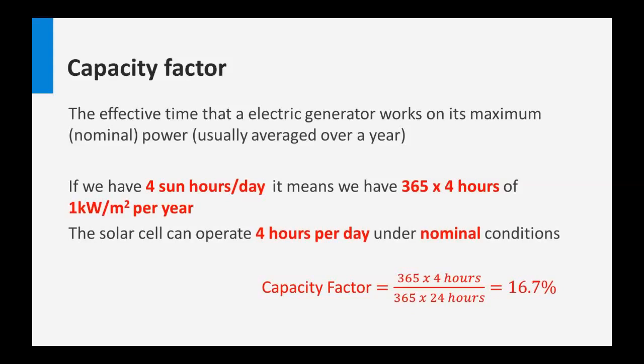For instance, in the Netherlands the capacity factor would be around 12 to 13%, whereas 4 sun hours per day is typical for Spain, where you would have a capacity factor for PV of 16.7%.